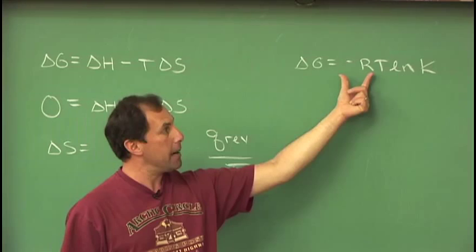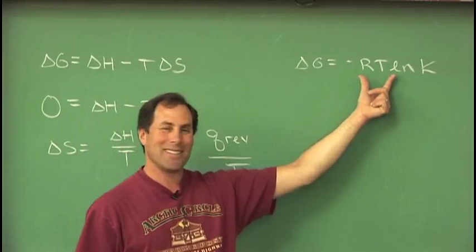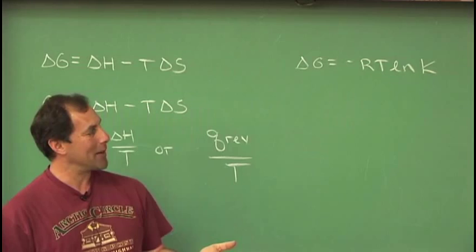R has been measured experimentally over the years, and people pretty much agree on a number: 8.314 joules per mole Kelvin. You measure the temperature of your system, and then this is so sweet.